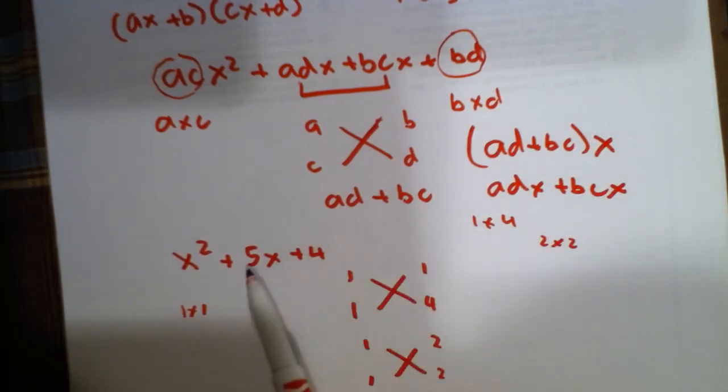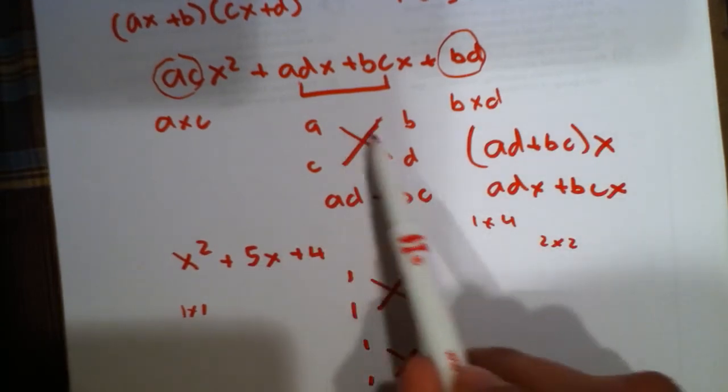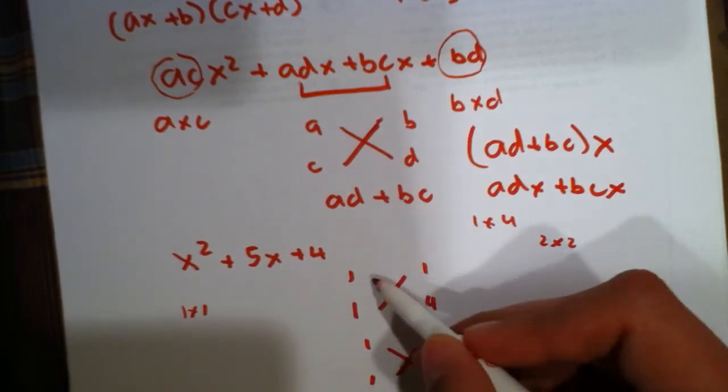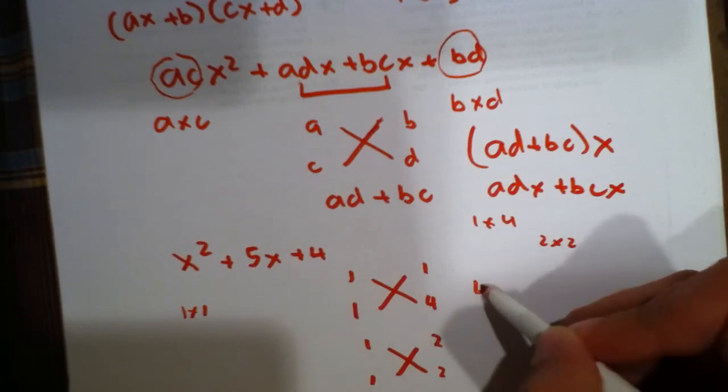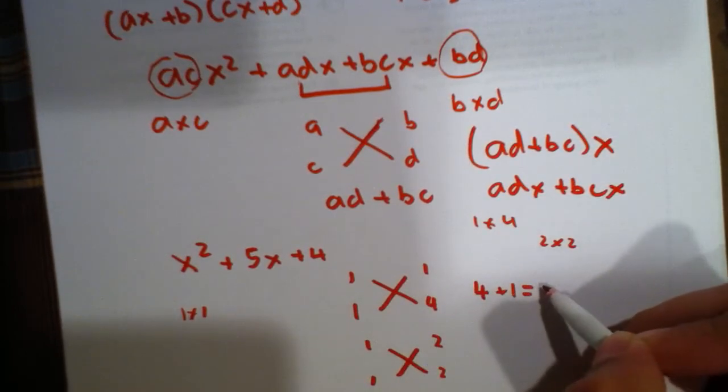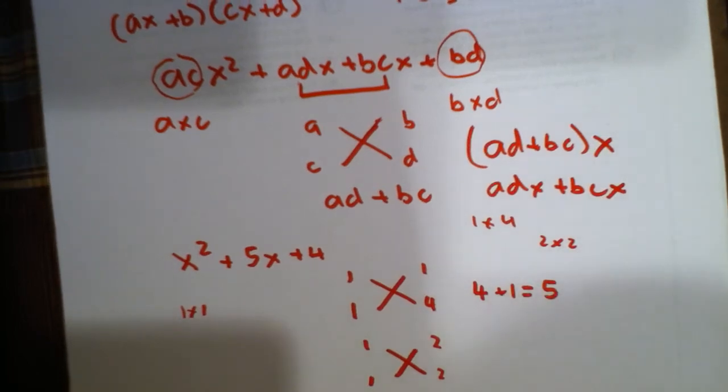So now, we use the same, remember, 5 is just ad plus bc. So, if we multiply across, it's 4, and we add the products, and this is 1 times 1 is 1, we get 5 in the middle term, which is actually what our constant here is. So, this is actually correct.